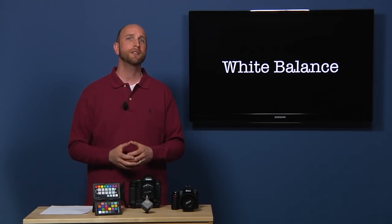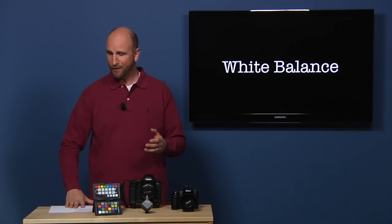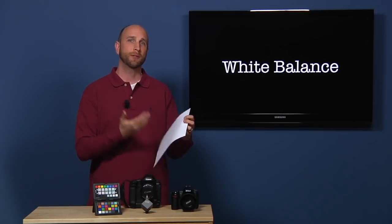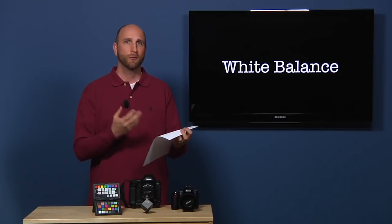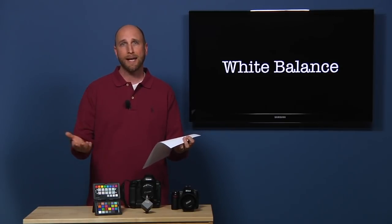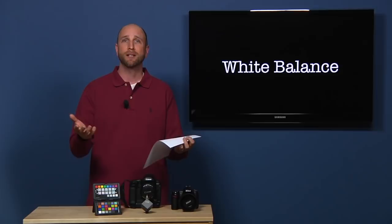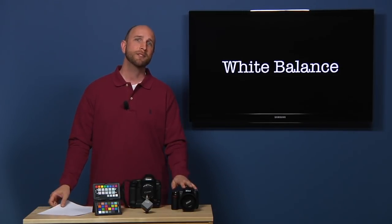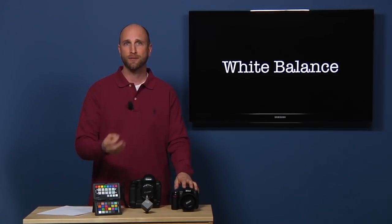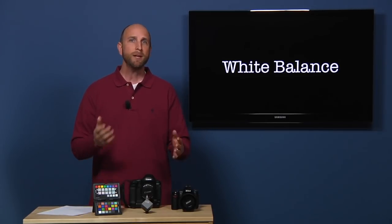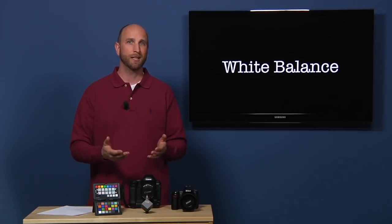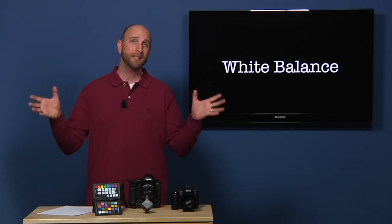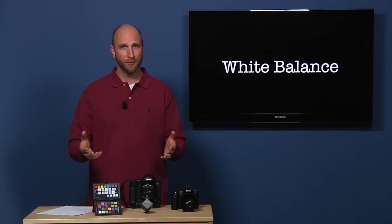We can begin to understand white balance by looking at an ordinary page of white paper. When we look at a piece of white paper with our eyes, it looks white — whether it's lit by a candle, a fluorescent light, or the sun. It always looks white. But our cameras get confused by different sources of light. It may think white is actually orange when lit by a candle, fluorescent lights can turn things green, and big skies can turn things really blue.